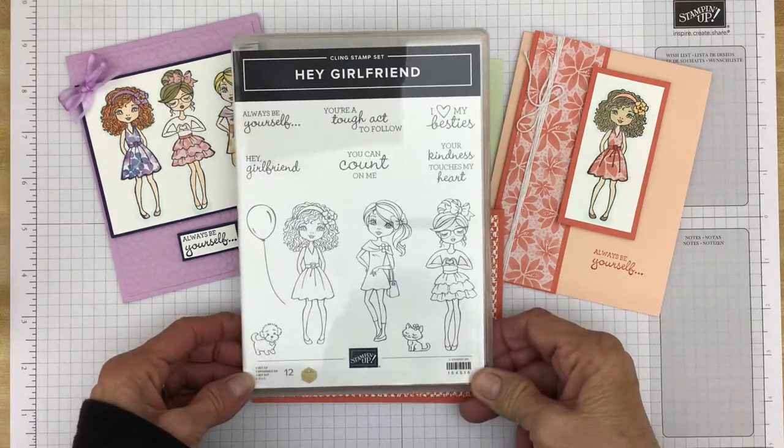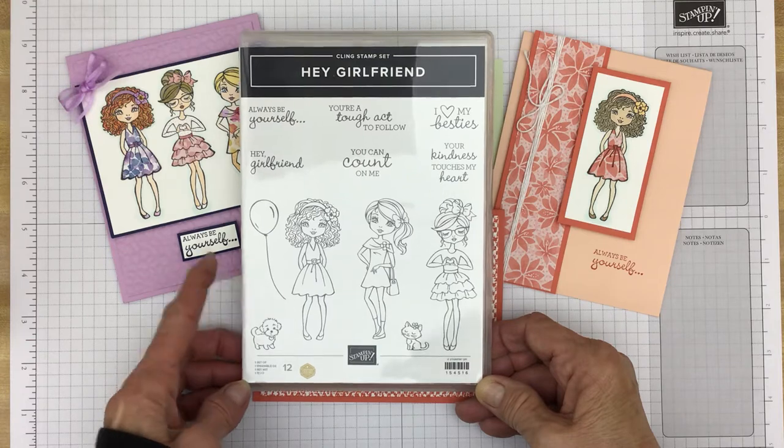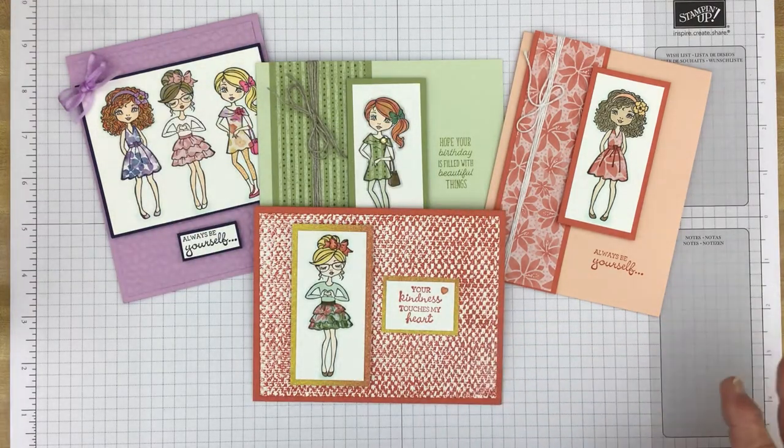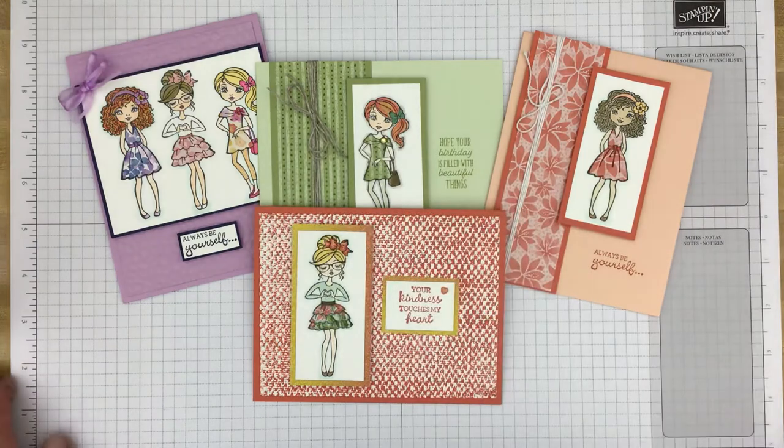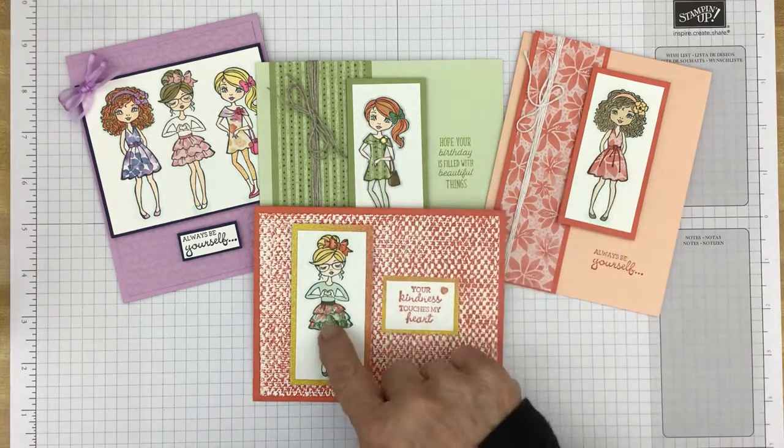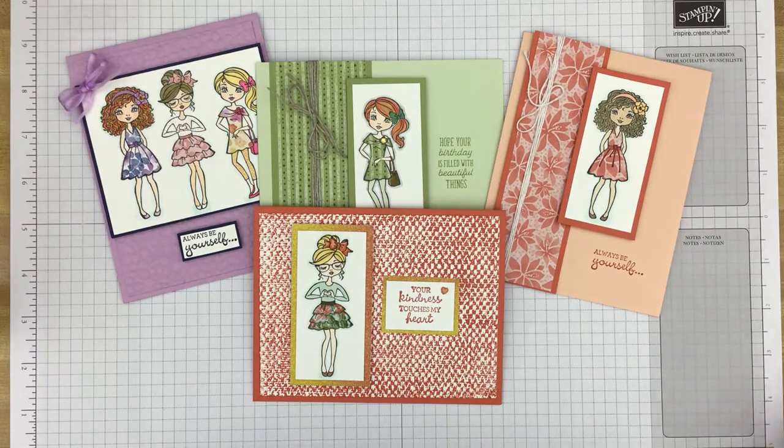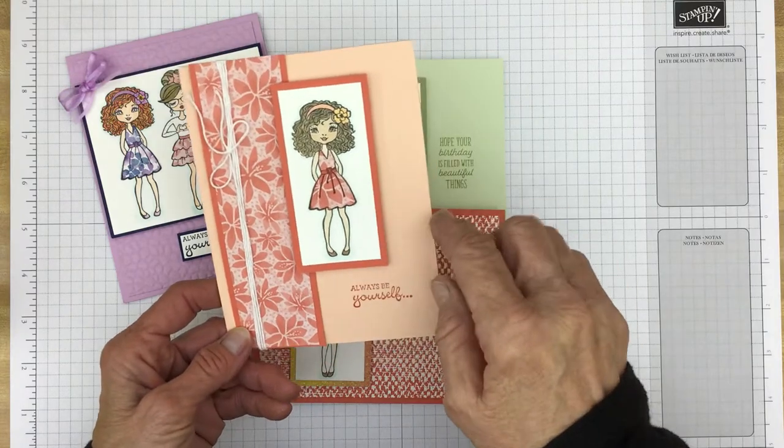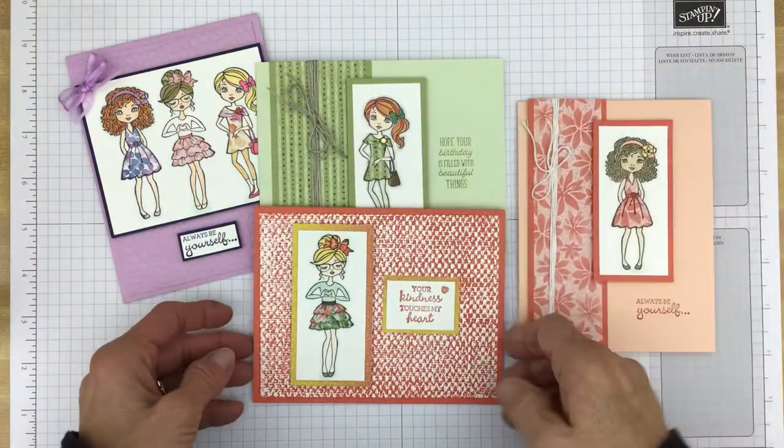So I thought we would take an opportunity today to make a card using this stamp set. If you like to color this is definitely the stamp set for you. I've done quite a bit of coloring using Stampin' Blends, but I also have done some paper piecing. We'll make a card similar to this one except it will be in the landscape orientation like these two.